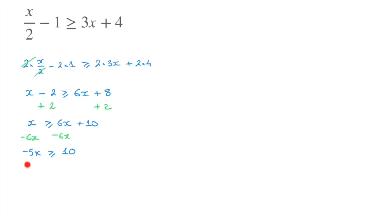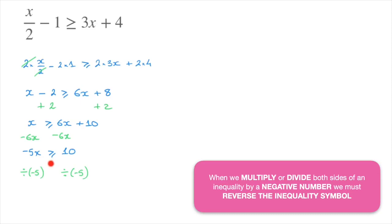Finally, we have x being multiplied by negative 5, so to get rid of the negative 5 we divide by negative 5 — and we do the same on the other side. But careful! In this case we're dividing by a negative number. Remember: when we multiply or divide both sides of an inequality by a negative number, we have to reverse the inequality symbol. So this greater than or equal to becomes less than or equal to. We have negative 5x divided by negative 5, which leaves x, and on the right-hand side 10 divided by negative 5, which equals negative 2. So x must be less than or equal to negative 2.